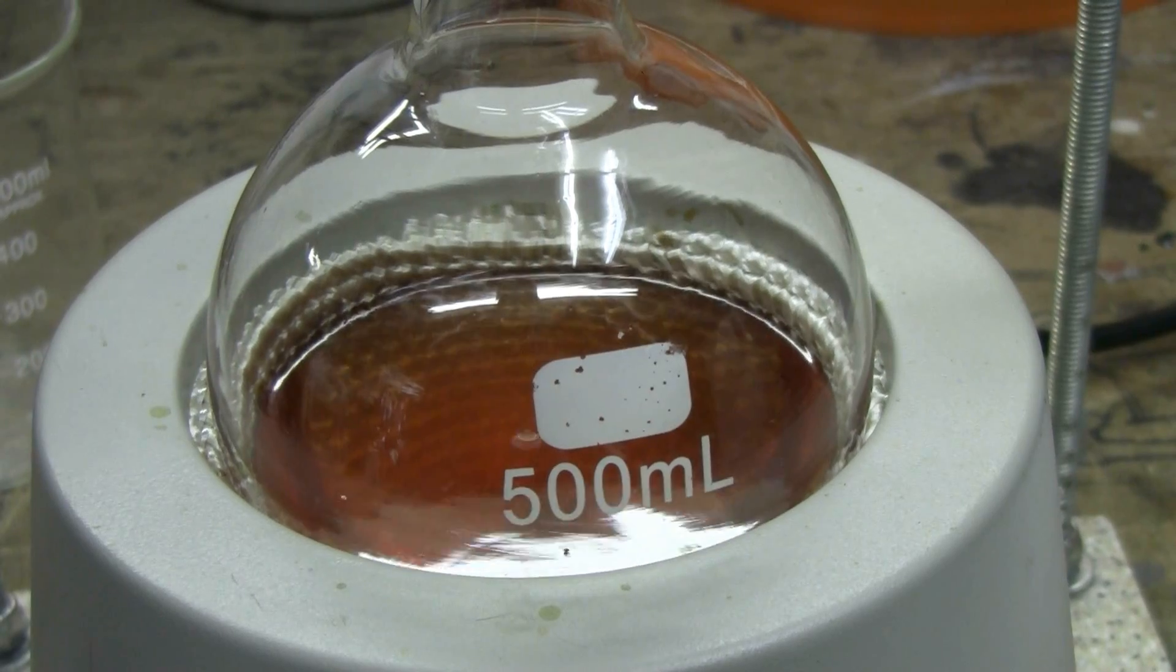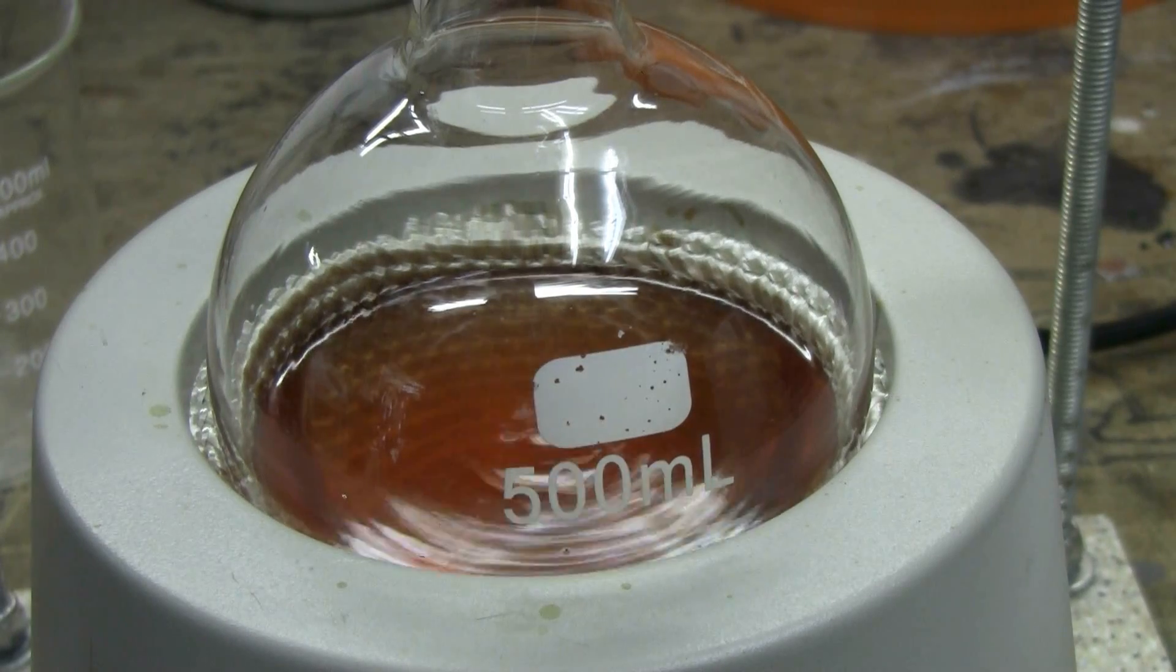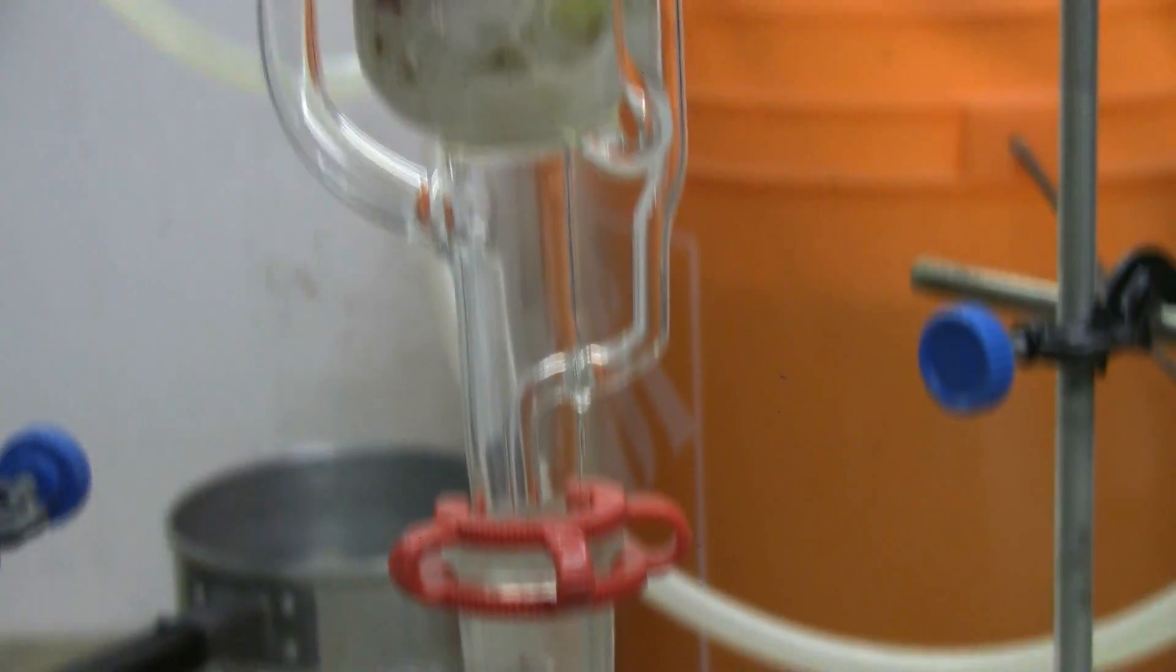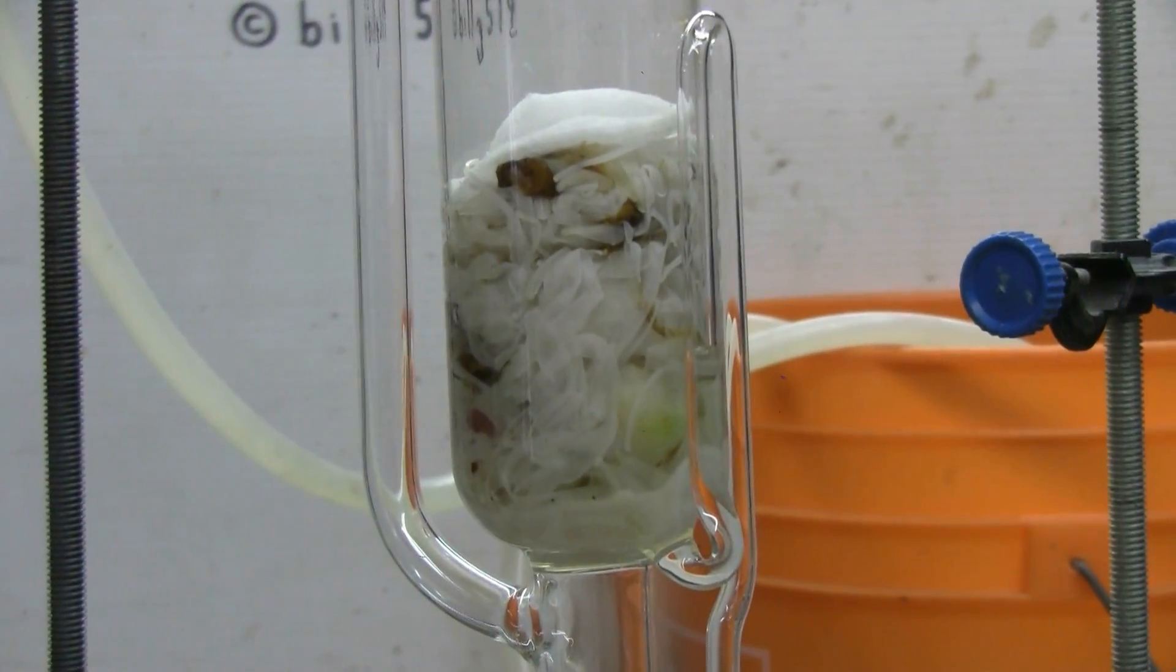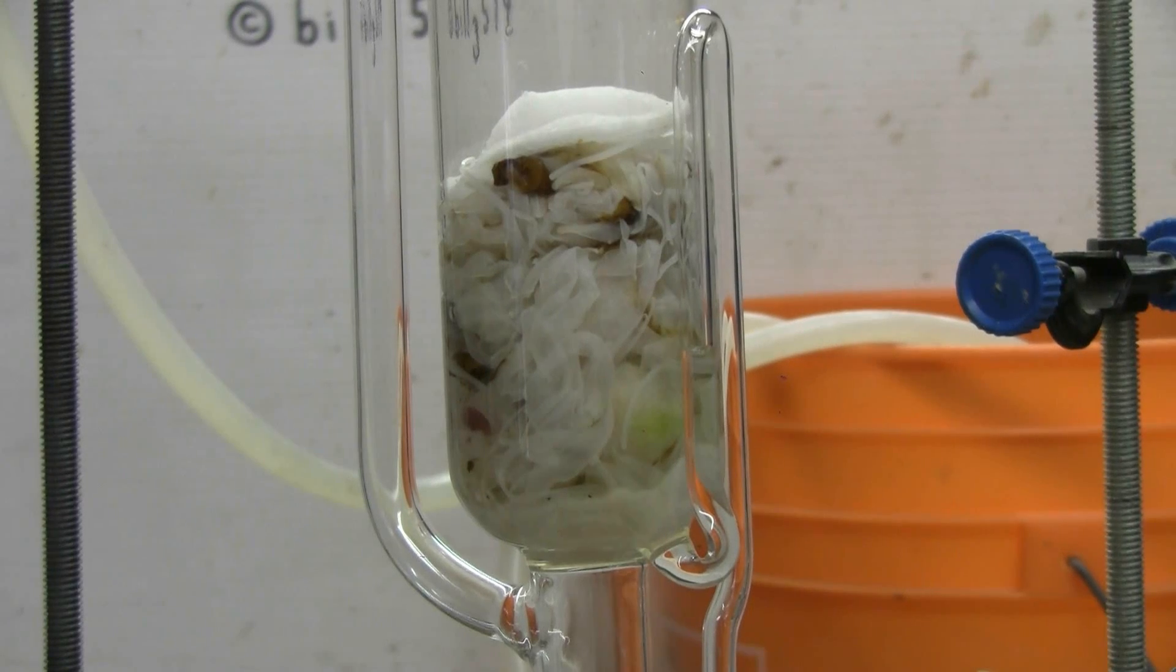With ten cycles completed, the extract down in the boiling flask is a nice rosy pink color. The formerly colored peony flowers themselves are now bleached pretty much to white in the Soxhlet chamber. So this extraction is finished and I can proceed with simple distillation to recover my ethanol.